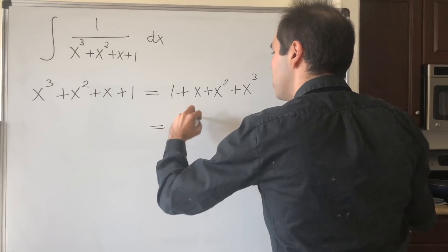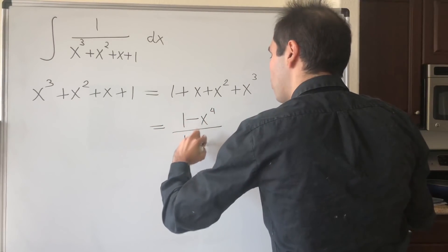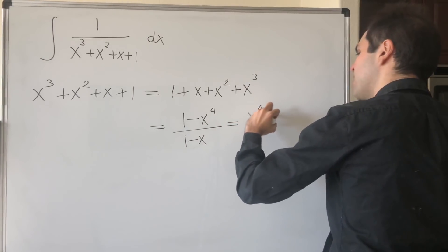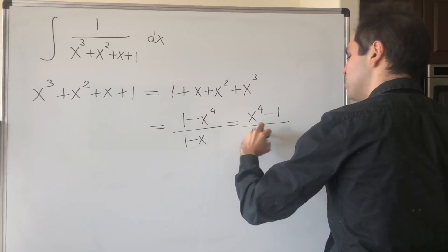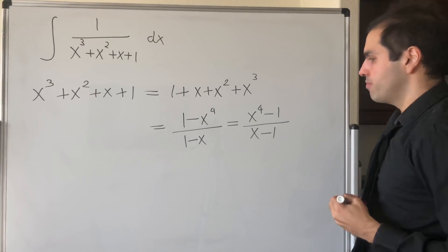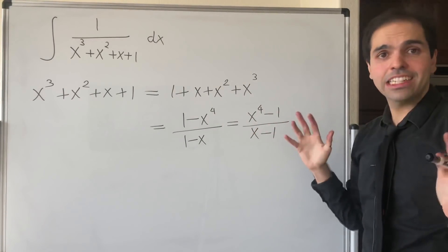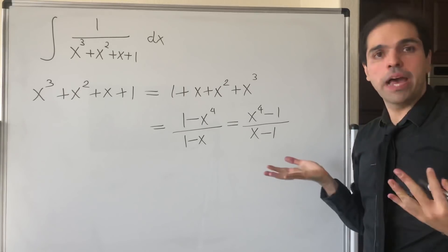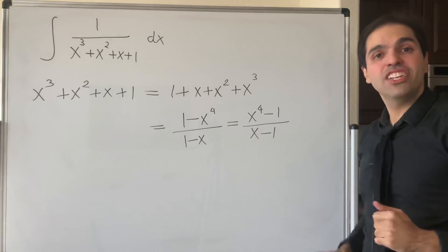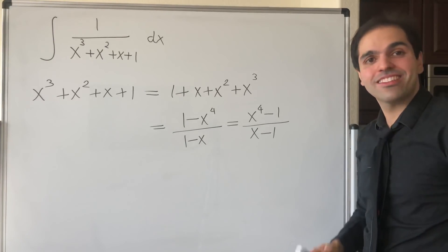That's precisely the geometric series, and that's why it's called the geometric integral. Namely, this becomes 1 minus x to the fourth over 1 minus x, which is the same thing as x to the fourth minus 1 over x minus 1. Now this is valid for every x except for 1, but the factorization I'll write down will be valid for every x.